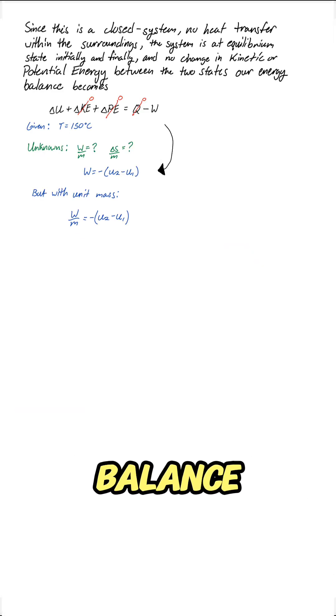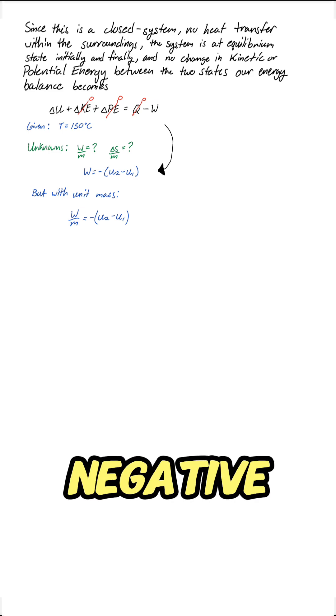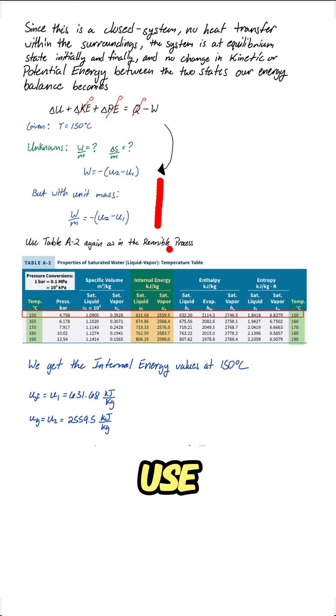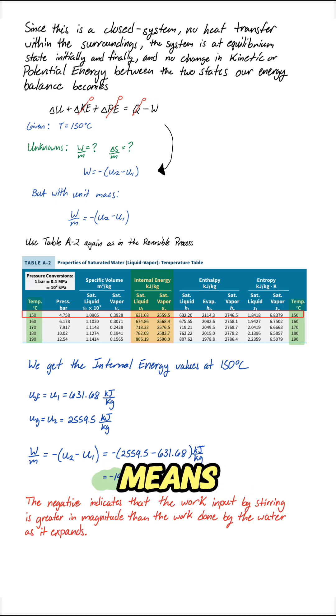Using the energy balance, W over M equals the negative of the change in internal energy. From table A2, we use the internal energy of saturated liquid and saturated vapor at 150 degrees Celsius. That gives about negative 1928 kilojoules per kilogram. The negative means the paddle work input is greater than the expansion work.